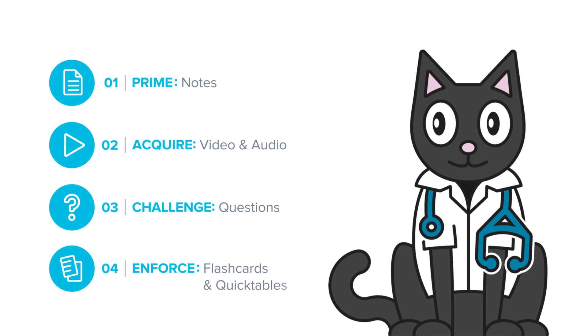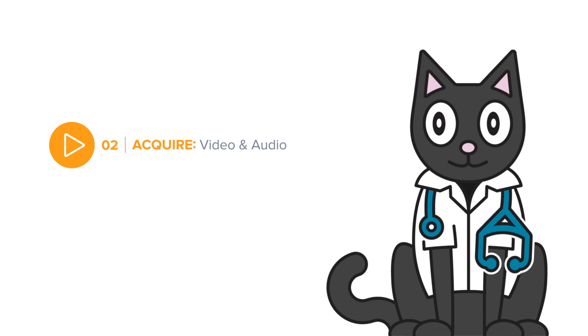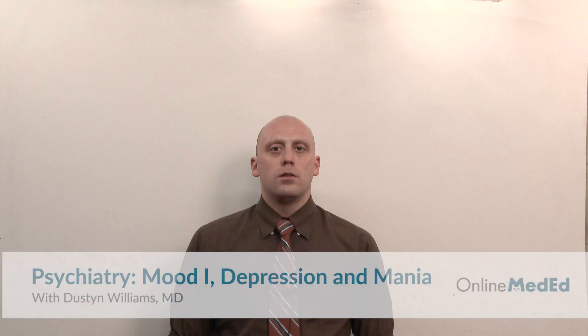At Online Med Ed, we walk you through every topic in detail so you're ready for the boards and the wards. Mood 1 combines two sections in the DSM-5: Depressive Disorders and Bipolar. It makes more sense to see these on a spectrum and leave out the low-yield diseases in between. There are a few spelled out in the notes, but we've considered them too low-yield for this lesson.